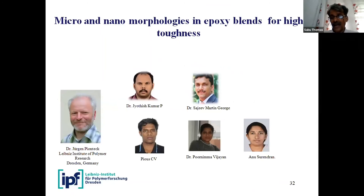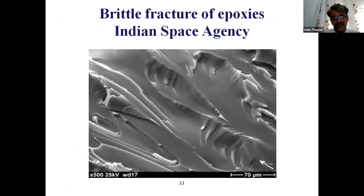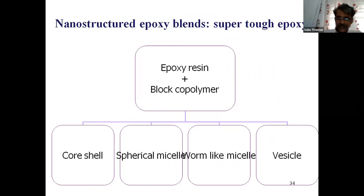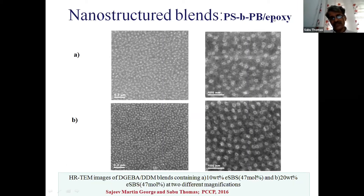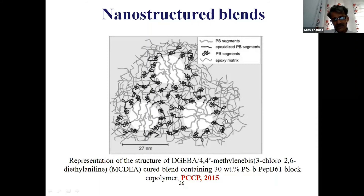Let me show you work we have done with the Department of Space in India, in cooperation with the Leibniz Institute in Germany. The material given to us was epoxy — a wonderful material but with very poor fracture resistance and impact strength. We mixed epoxy with block copolymers and made various nanostructures: spherical micelles, worm-like structures, and vesicles. By mixing epoxy resin with polystyrene block, polyisoprene block, and di-block copolymers, we made beautiful vesicular structures giving rise to tortuous crack pathways and super-tough epoxy nanocomposites.